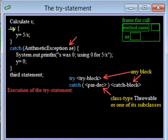Execution of the TRY statement begins with execution of the TRY block. We have three cases to consider, depending on whether an object is thrown, and if one is thrown, whether this TRY statement catches it or not.